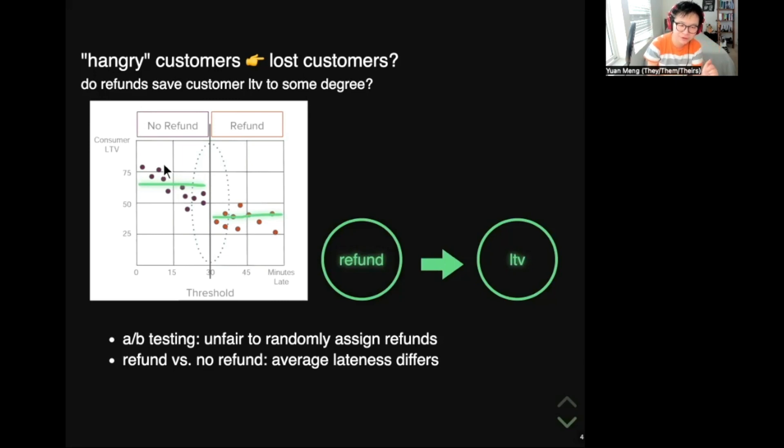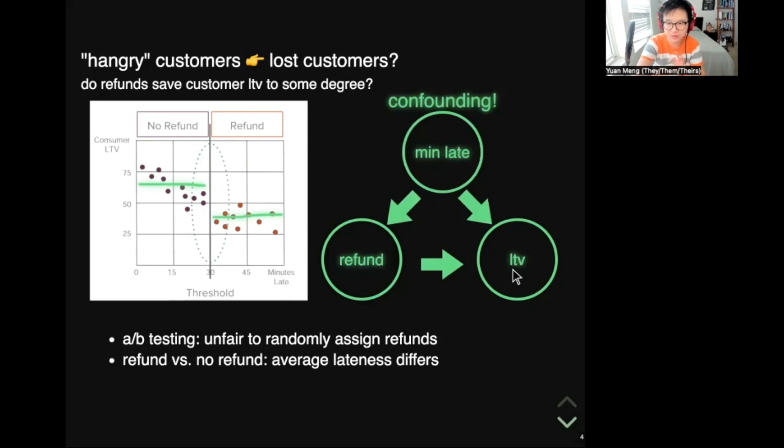If you recall from our previous tutorials, you may remember that there's a problem called confounding. Here, order lateness is a factor that can impact both a customer's treatment assignment, whether or not they get a refund, and the outcome, which is their lifetime value. Customers who got a refund waited longer for their orders on average compared to customers who received no refunds. And because of this difference in average order lateness, the treated customers are on average less happy compared to the untreated ones. Because of this baseline difference, even if the treatment has a positive influence on the outcome, we may not be able to observe it.